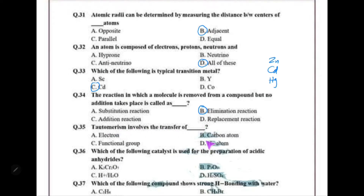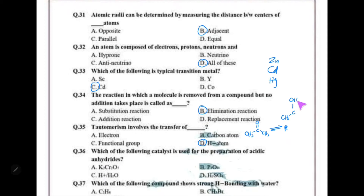Tautomerism involves the transfer of a hydrogen atom or proton. For example, in the keto form — propanone (CH₃–CO–CH₃) — a proton shifts from the CH₃ group toward the oxygen, forming an OH group and a CH₂ group. This is the keto-enol tautomerism.